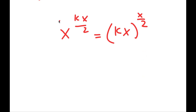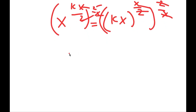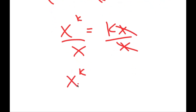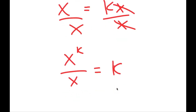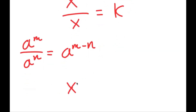Next, I raise both sides to the power of 2/x, which cancels the x/2 exponents, leaving x^k = kx. Dividing both sides by x and applying the rule a^m / a^n = a^(m−n), I get x^(k/x) / x = k, which simplifies to x^(k−1) = k.